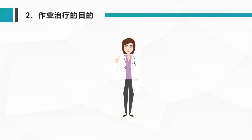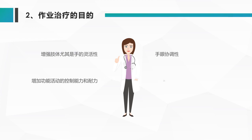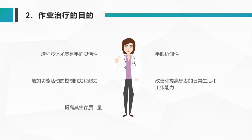作业治疗的目的，主要从几个方面来说：第一，增强肢体尤其手的灵活性；第二，增加手眼协调性；第三，增加功能活动的控制能力和耐力；第四，改善患者的日常生活和工作能力，提高生存质量，使患者早日回归家庭、重返社会。